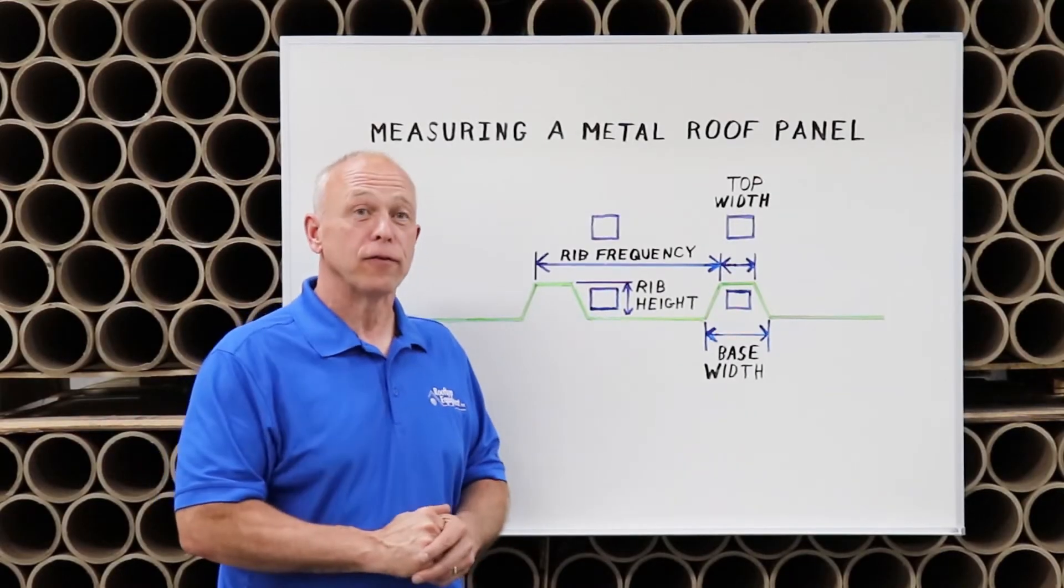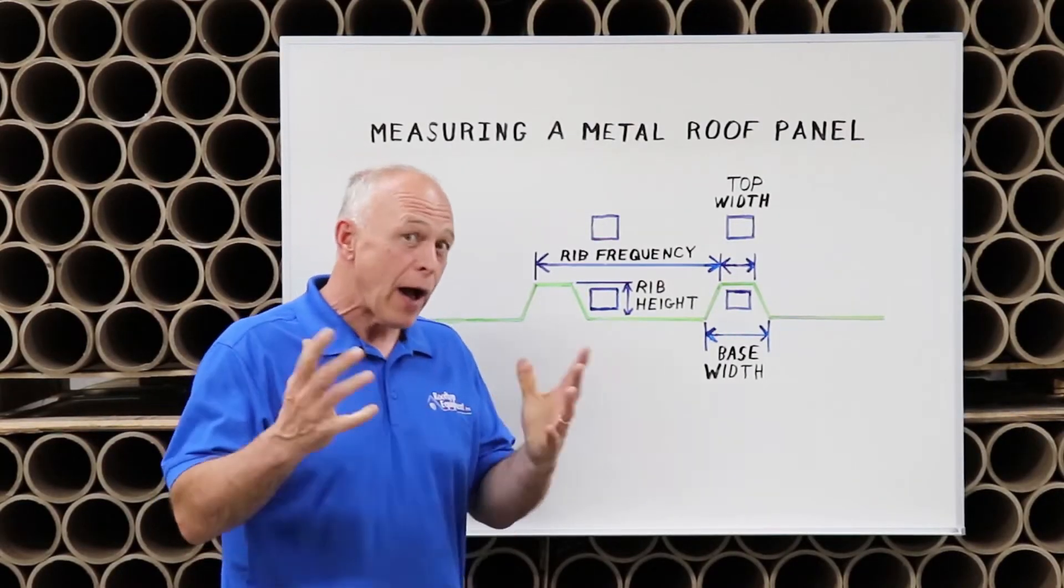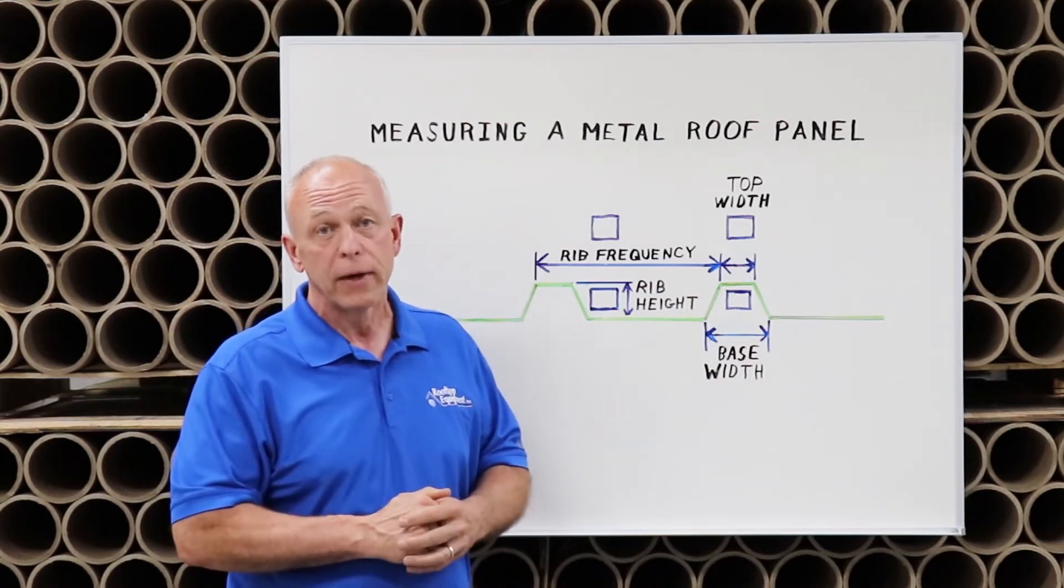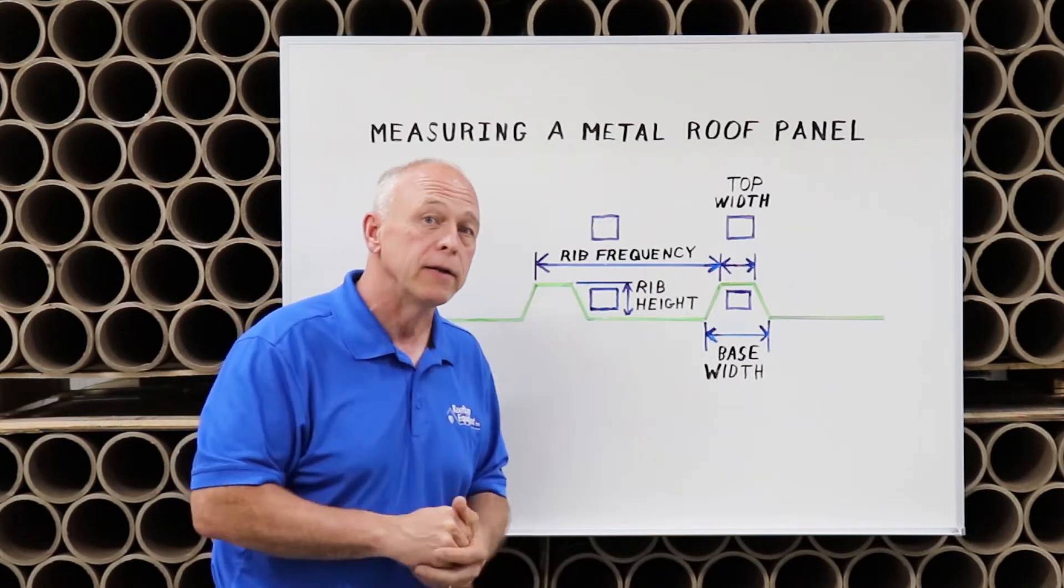There are hundreds of profiles of metal roof panels, so how can you be sure that you're getting the right roller that's going to work on the rib of your metal panel? Well, there are four key dimensions.